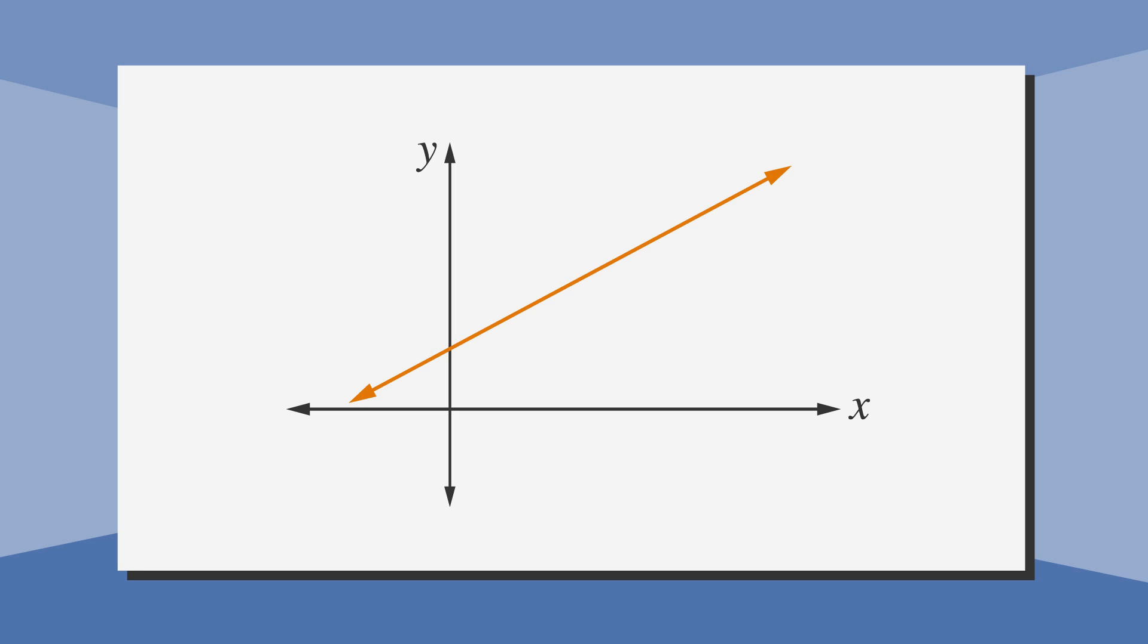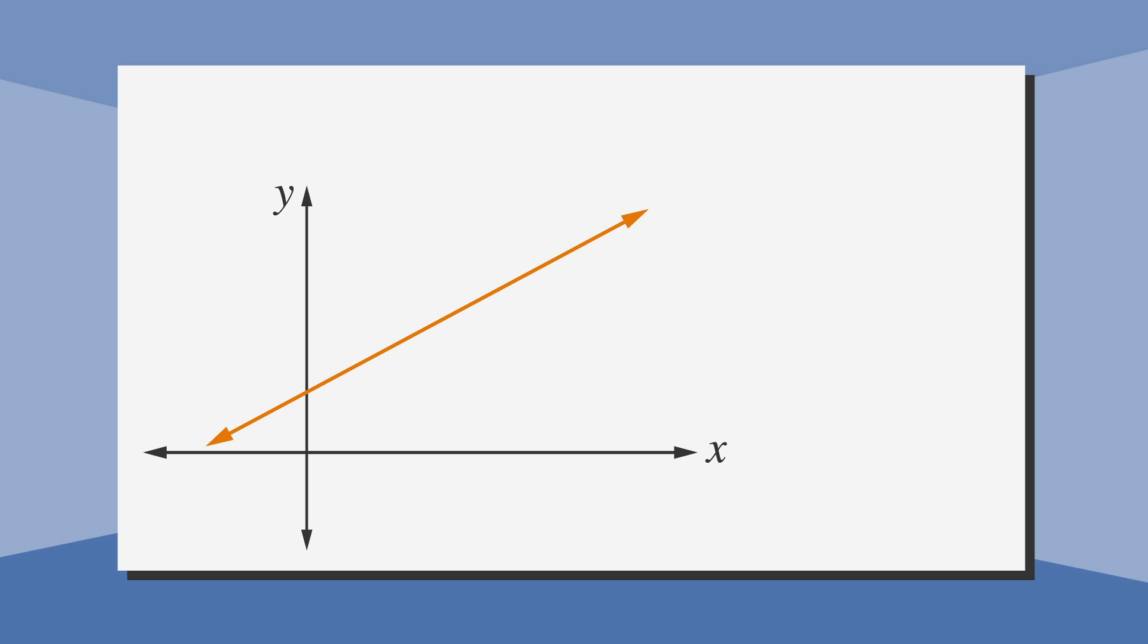If you know both the slope and the y-intercept, you can write an equation of a line in slope-intercept form. You might know slope-intercept better as y equals mx plus b. In this equation, m stands for the slope, and b represents the y-intercept.